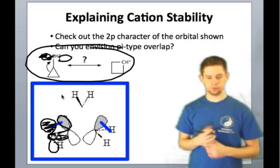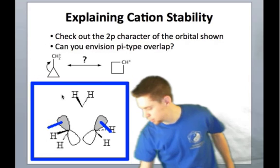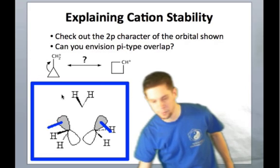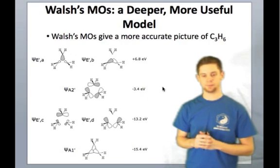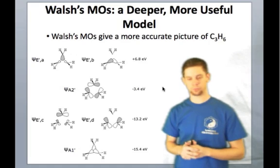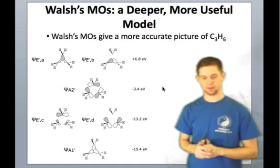So hopefully this has convinced you that Walsh's model can be used to explain a number of experimental observations that the simple banana bond picture really couldn't explain for us. Here are the molecular orbitals for you one more time if you want to take a look at those. And